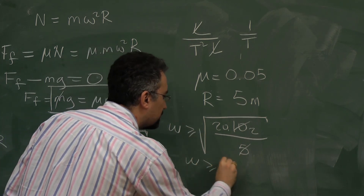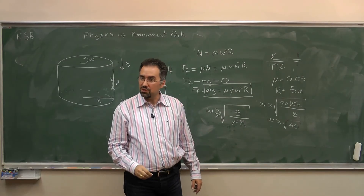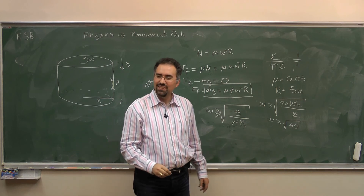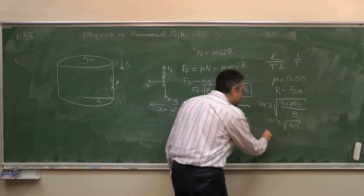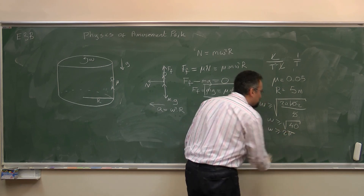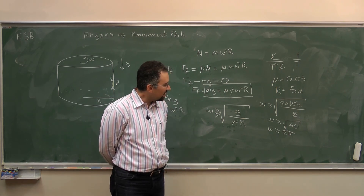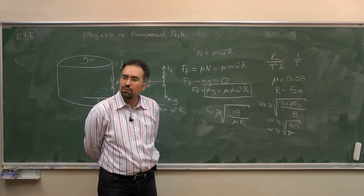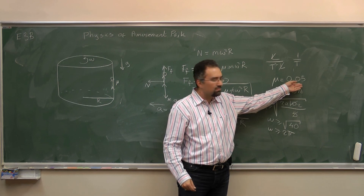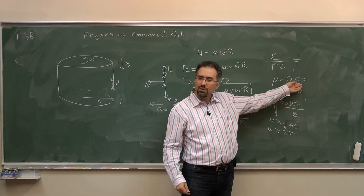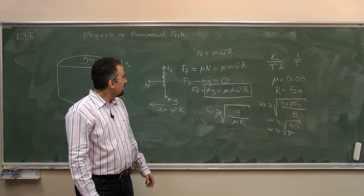So omega must be greater than or equal to the square root of 40, which is approximately 2 pi to an excellent approximation — about 6.28. That means the frequency is about 1 revolution per second, which is doable. Even if friction is 10 times less, it would only require about 3 times more speed. So this is generally safe, and that's the solution to the problem.